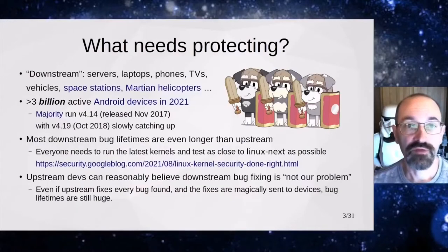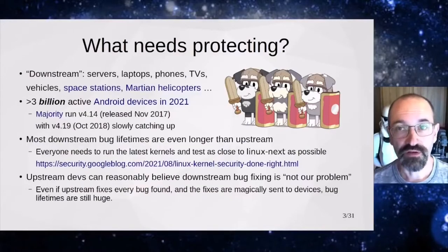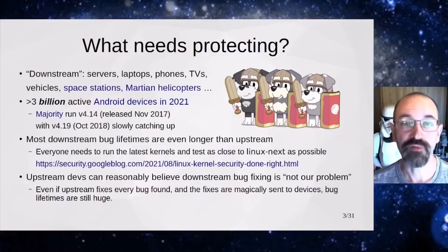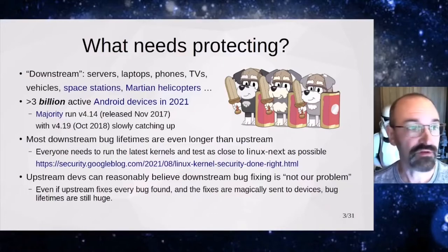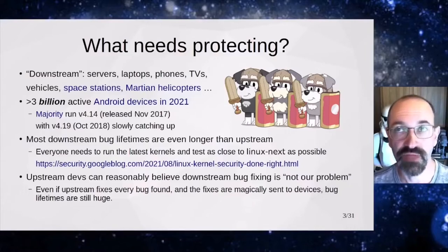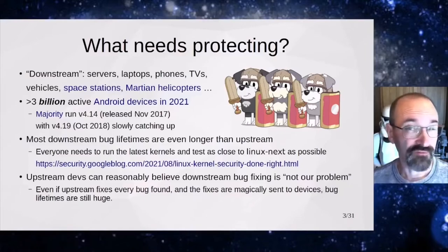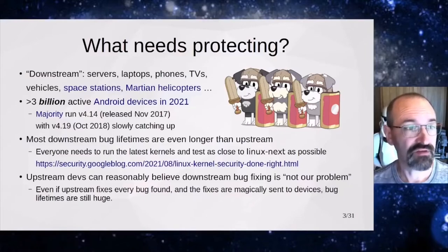I think the first step is seeing what needs protecting. We're really looking at the downstream from the Linux kernel — the servers and laptops and phones and TVs and everything else. The latest numbers out of Android are that there are over 3 billion Android devices active in 2021. The majority of those are running 4.14 from 2017, with 4.19 slowly catching up.